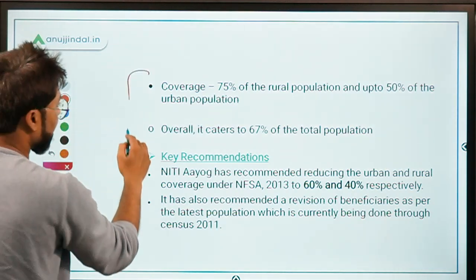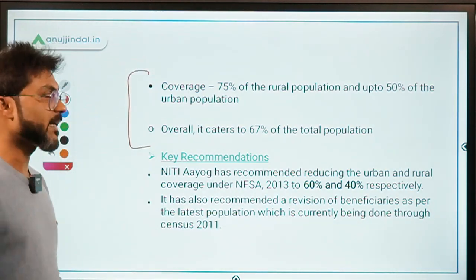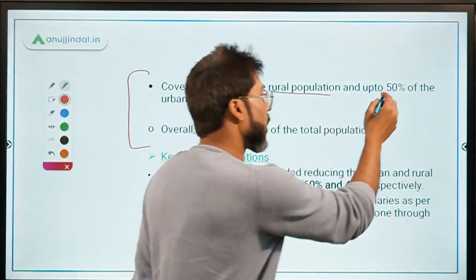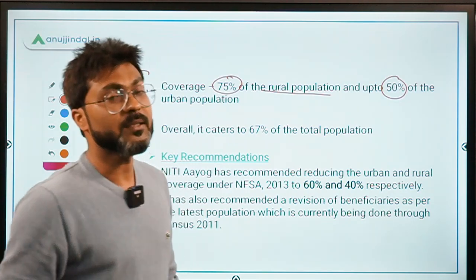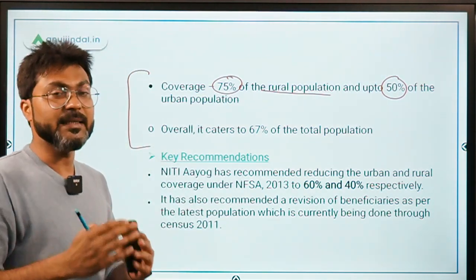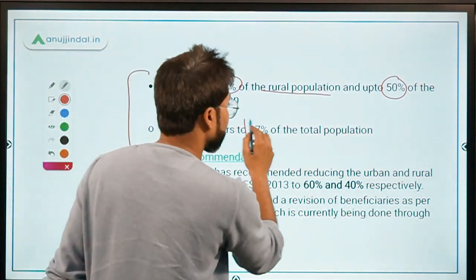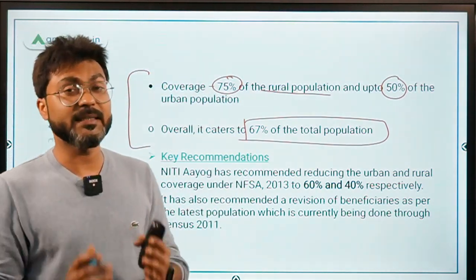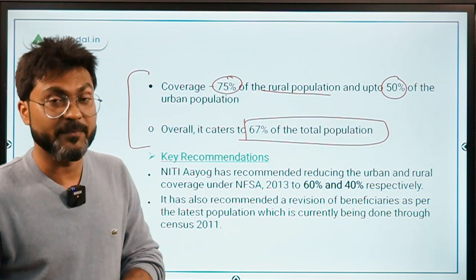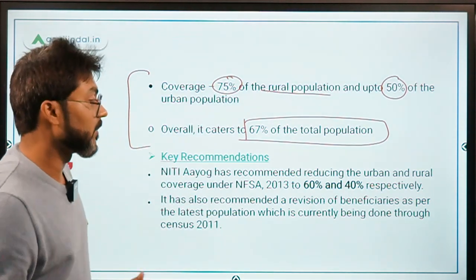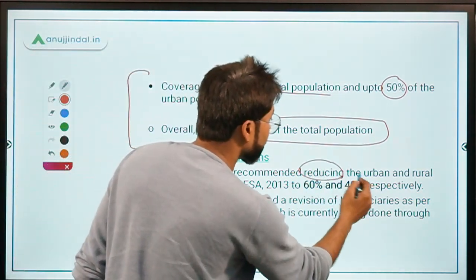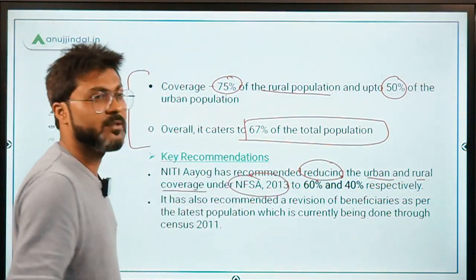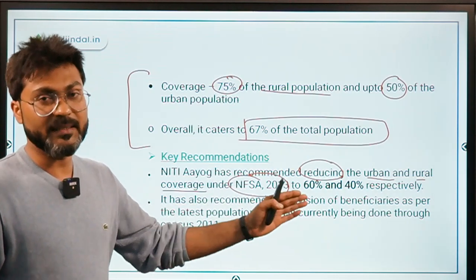The current coverage under NFSA is 75% of the rural population and up to 50% of the urban population. Currently it covers around 67% of the total population. NITI Aayog has recommended that we should reduce the rural and urban coverage under NFSA 2013 to 60% and 40% respectively.